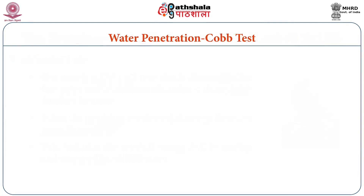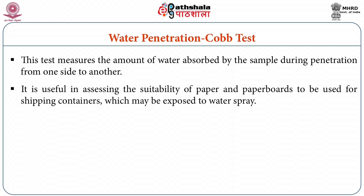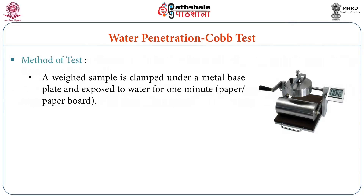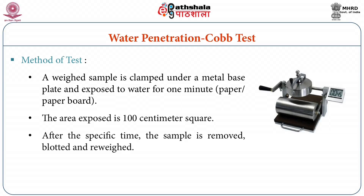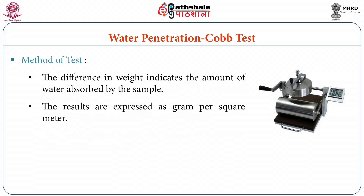The next test is water penetration or Cobb test. This test measures the amount of water absorbed by the sample during penetration from one side to another. It is useful in assessing the suitability of paper and paperboards for shipping containers which may be exposed to water spray. In the method of test, a weighed sample is clamped under a metal base plate and exposed to water for one minute. The area exposed is 100 square centimeter. After the specific time, the sample is removed, blotted, and reweighed. The difference in weight indicates the amount of water absorbed by the sample. The results are expressed in grams per square centimeter.